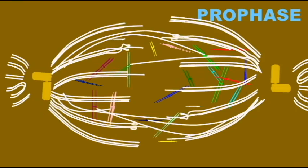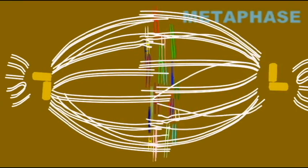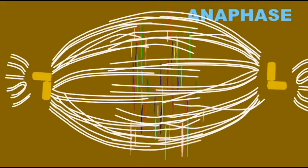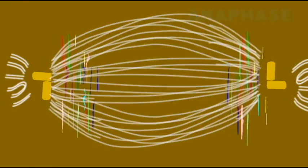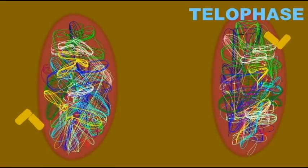Microtubules form asters, which proceed away from the chromosomes and help position the centrioles within the cell. They form kinetochore fibers, which actually attach to the centromeres of the chromosomes and help to position them.